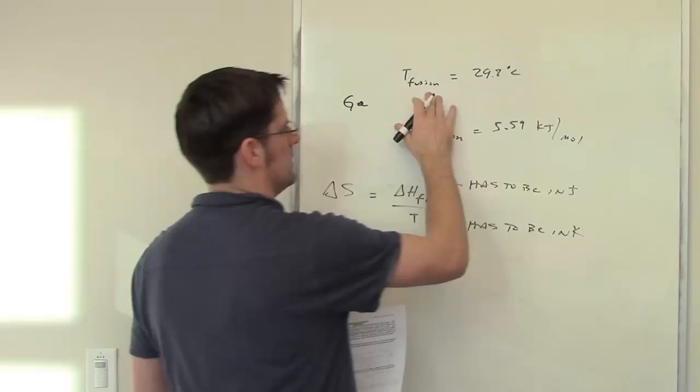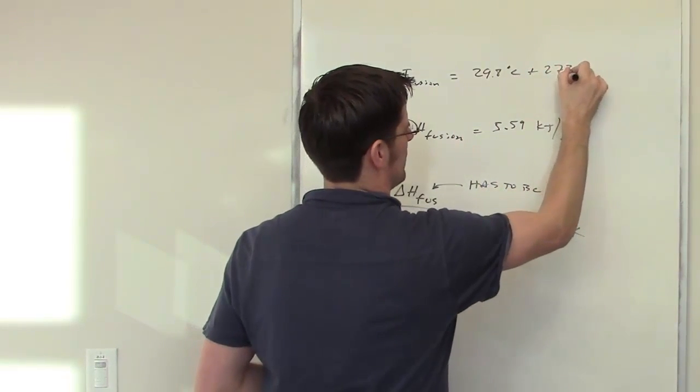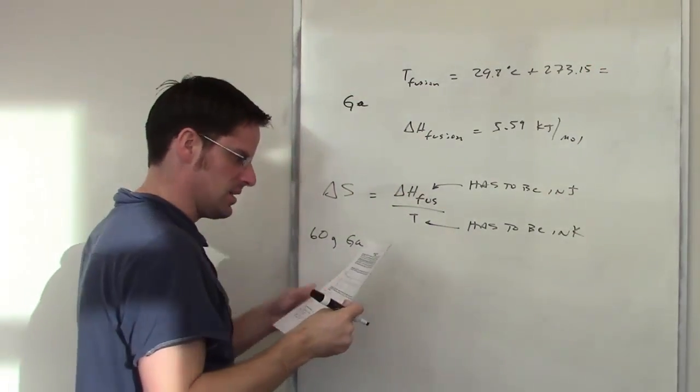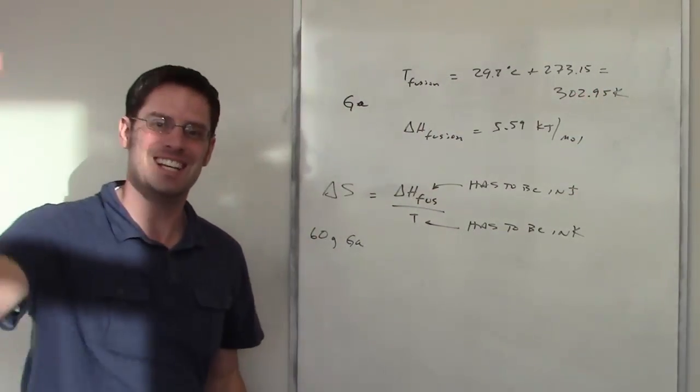So our temperature of fusion is 29.8. I add 273.15 to that and that will give me how many Kelvins that is, and that comes out to be 302.95 Kelvins.